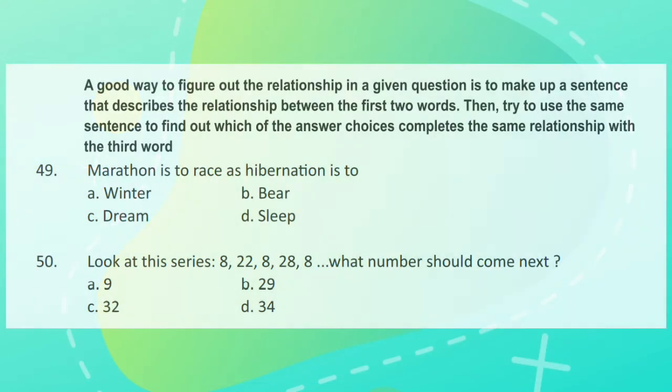Question 49. A good way to figure out the relationship in a given question is to make up a sentence that describes the relationship between the first two words. Then, try to use the same sentence to find out which of the answer choices completes the same relationship with the third word. Marathon is to race as hibernation is to?